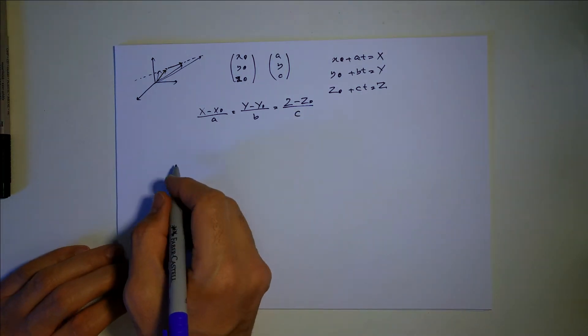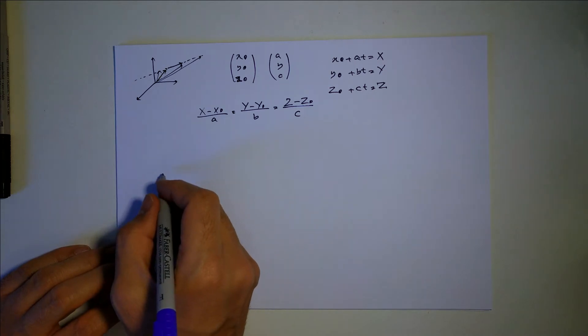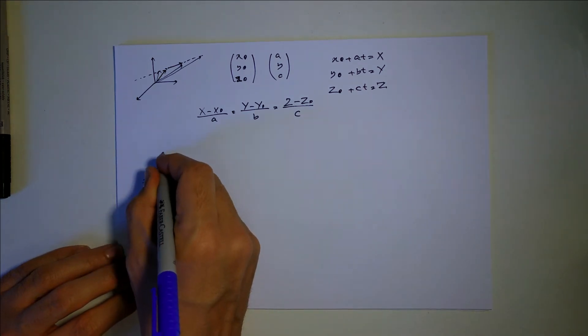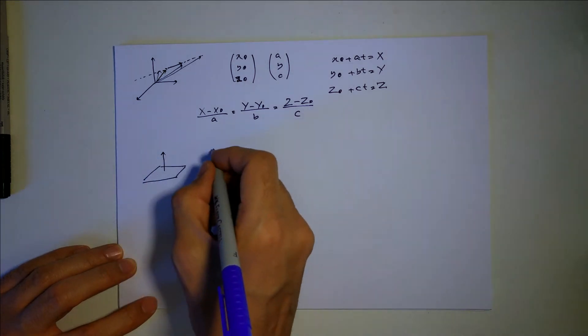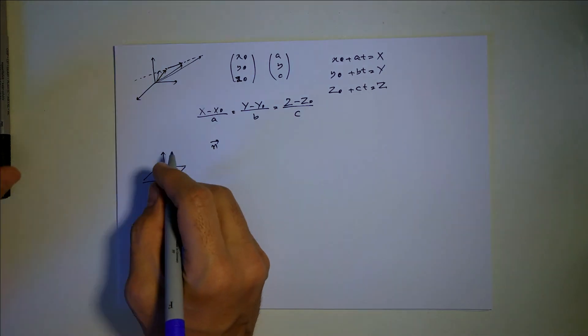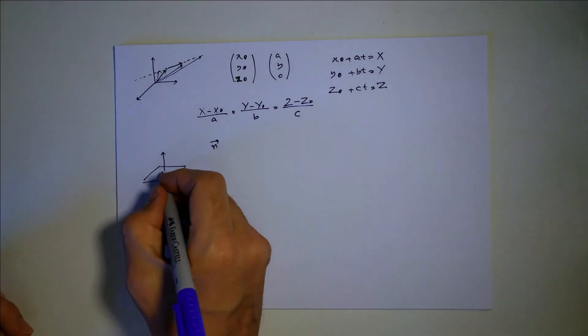Okay, now the equation of the plane. So for the plane, again, you need a vector which is perpendicular to the plane that you're looking for, and again a point. So this is my normal, which is called n, and a point.